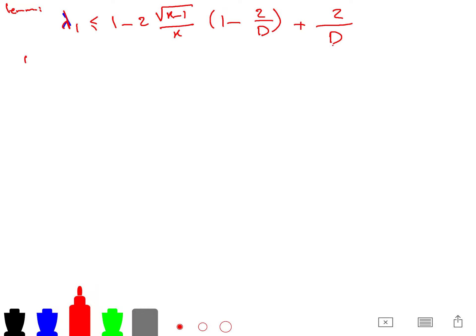So the proof is like this. So u and v are just two vertices at distance d from each other.